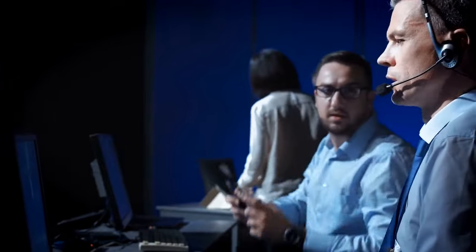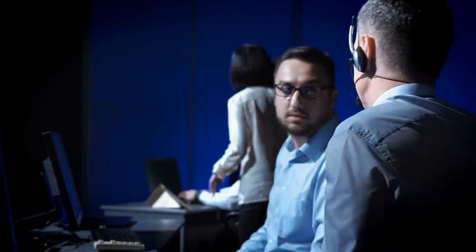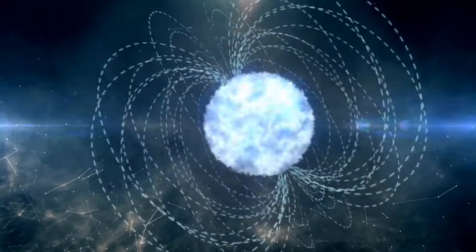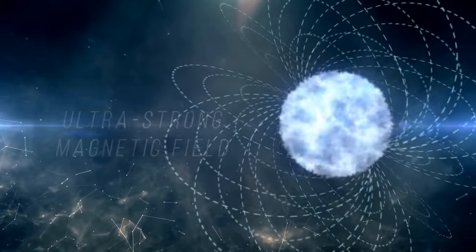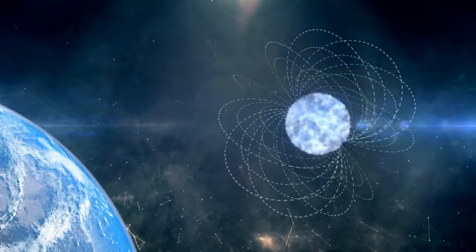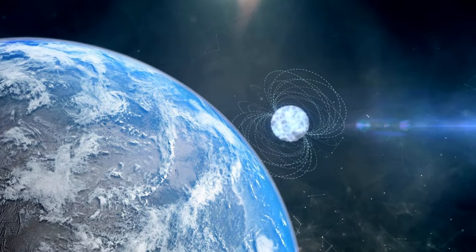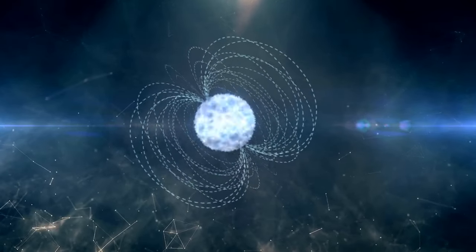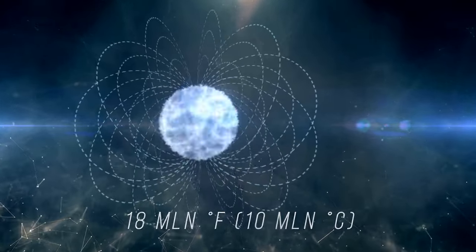They're almost sure they saw something never observed before, the birth of a magnetar. That's a rare form of a neutron star with an ultra-strong magnetic field. It's 1,000 trillion times stronger than our planet's. This field is also so powerful, it heats the star's surface up to 18 million degrees Fahrenheit.